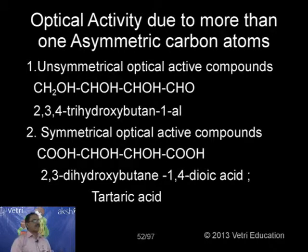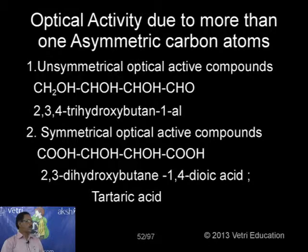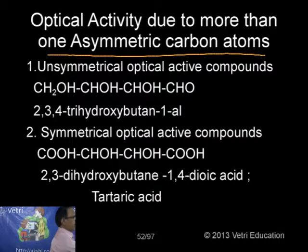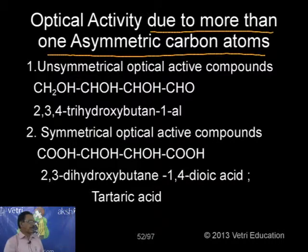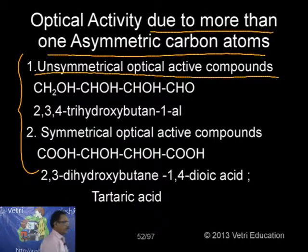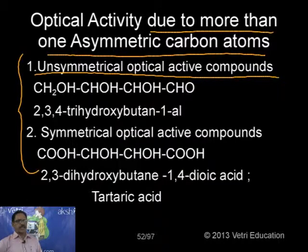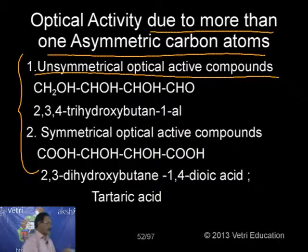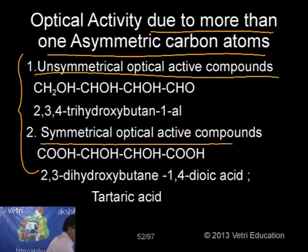Now let me go for optical activity due to more than one asymmetric carbon atom. I can classify this into two types: type one is unsymmetrical optical active compounds - the compound contains more than one asymmetric center and is unsymmetrical. Type two is symmetrical optical active compounds. If the top and bottom ends of the Fischer projection are different, I call it unsymmetrical.